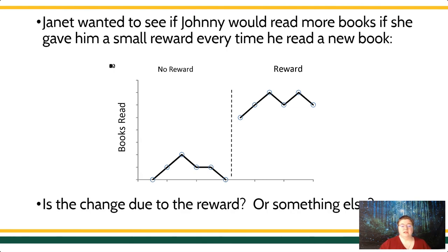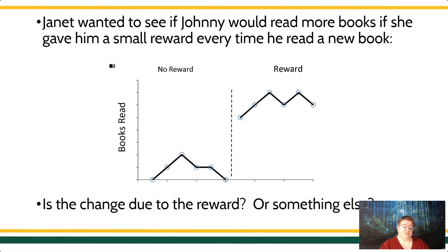Maybe Janet wants to see if Johnny is going to read more books when she gives him a small reward every time he reads a new book. In the baseline condition, the number of books read across time was zero, then one in the next observation, two in the third observation, one, one, and then zero. So we saw it increase, and then it came back down. That's the baseline condition.